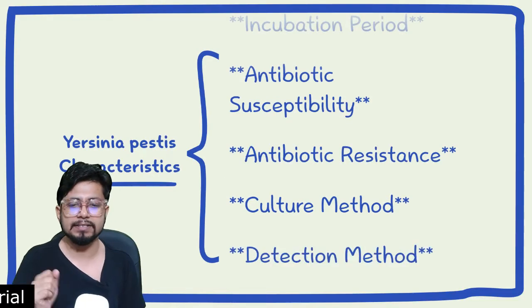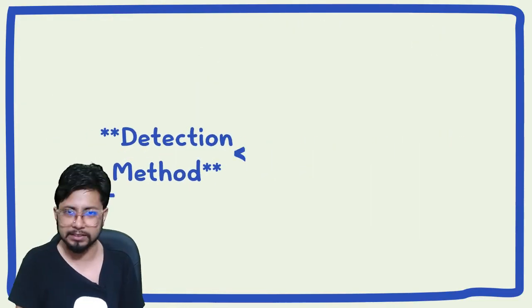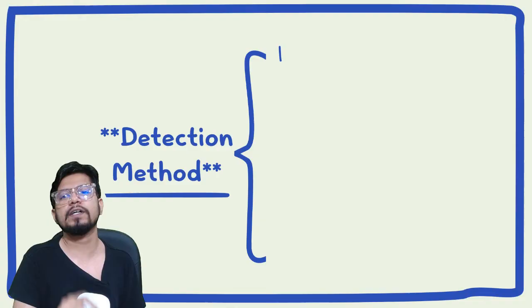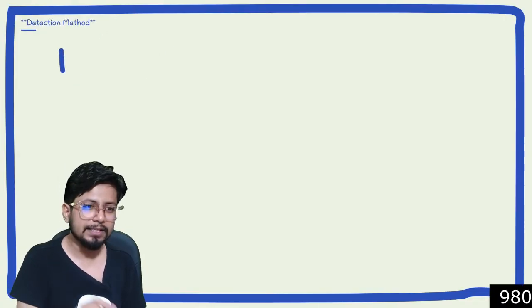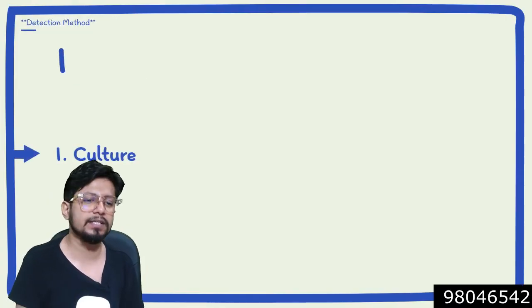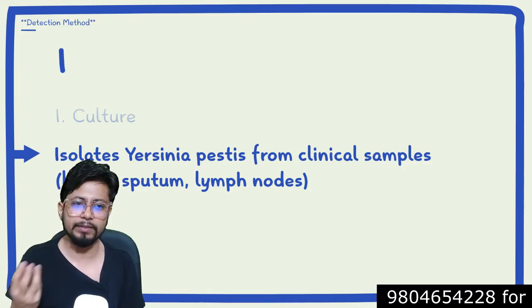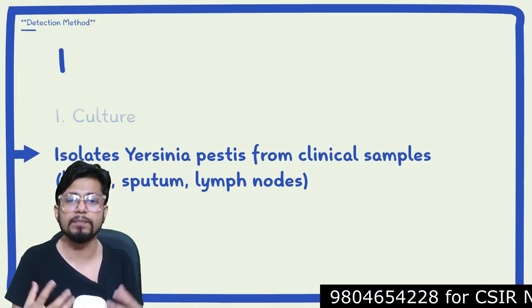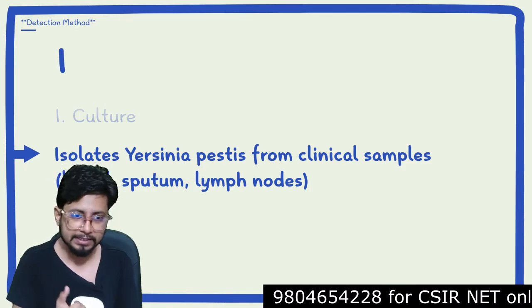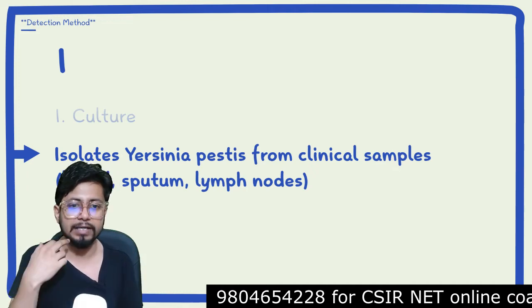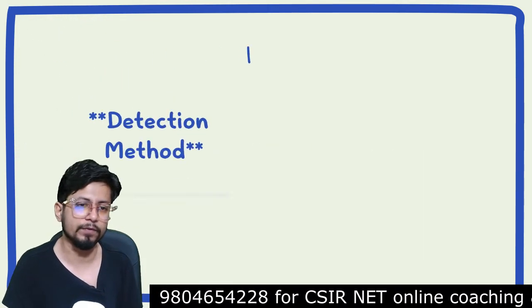There are three detection methods. The first is the culture method, where isolates of Yersinia pestis are taken from clinical samples — either blood samples, sputum samples, or lymph node samples from the lymph nodes.